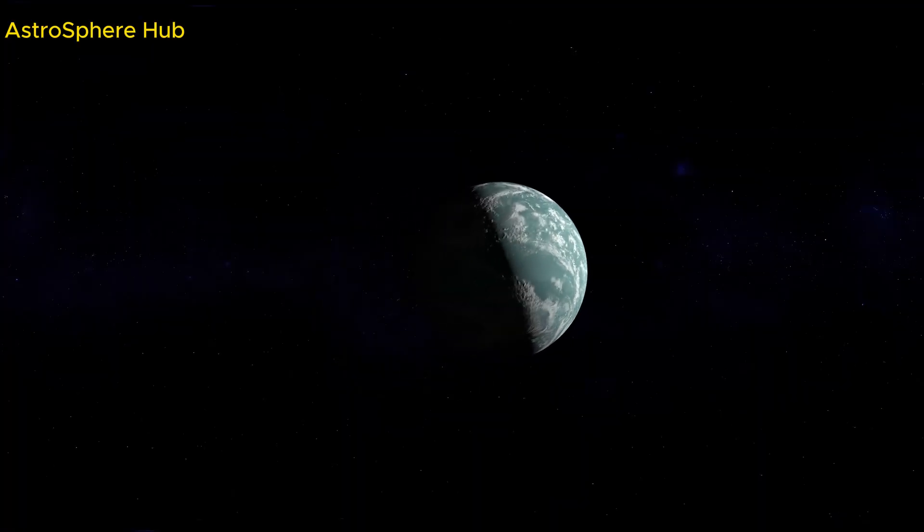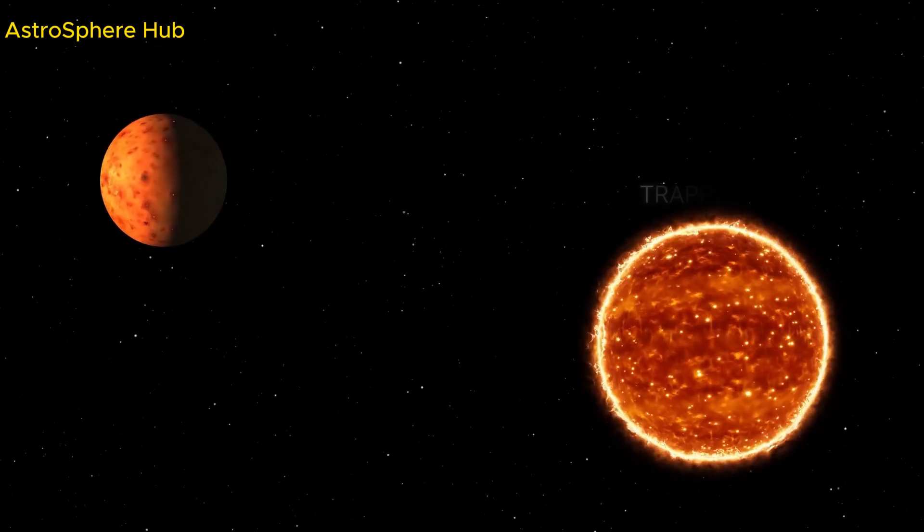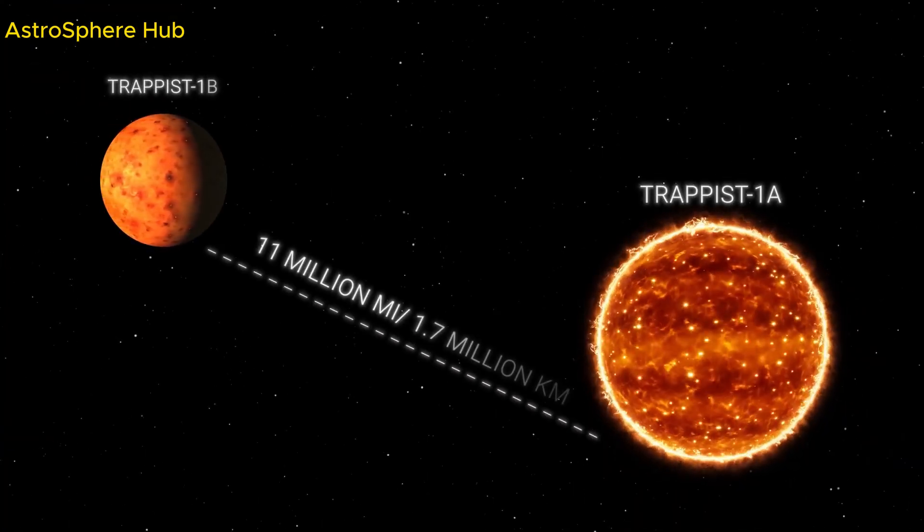The planet is too close to its parent star, much like Mercury in our solar system, which places it outside of the habitable zone.